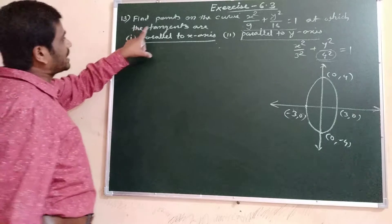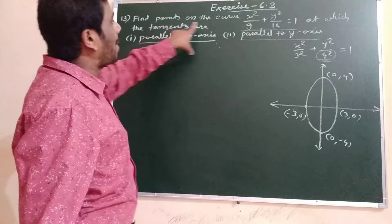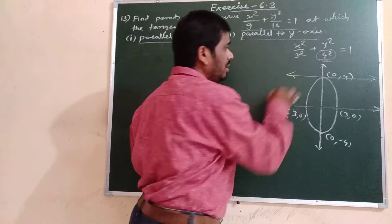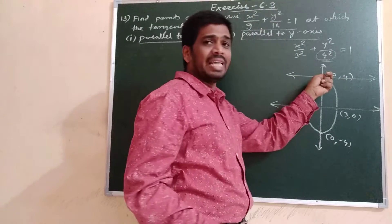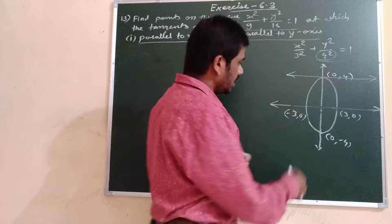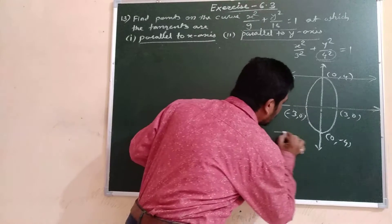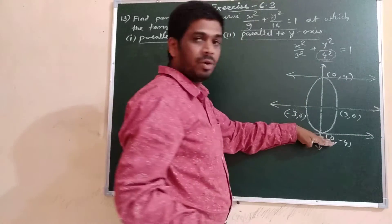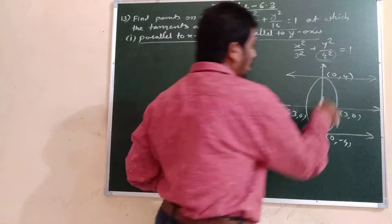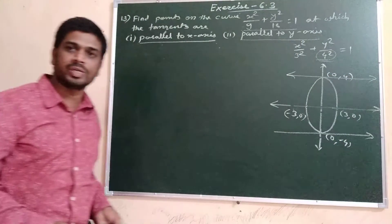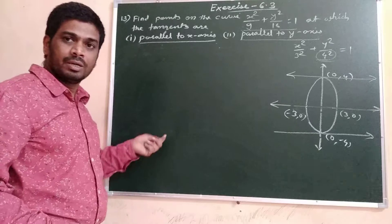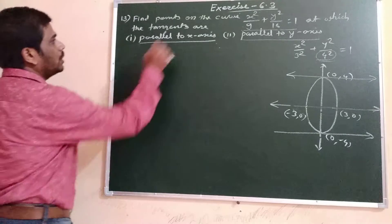It is given that tangents are parallel to the x-axis. The points where tangents are parallel to the x-axis will be (0, ±4). Let us verify this by finding the derivative.